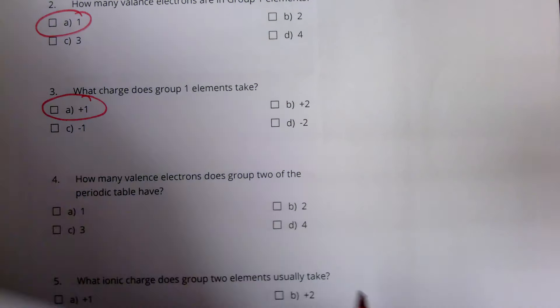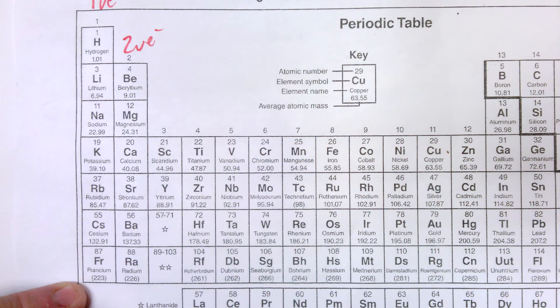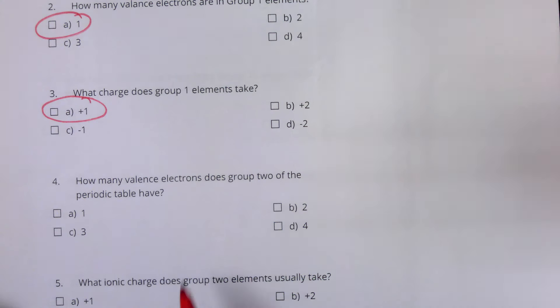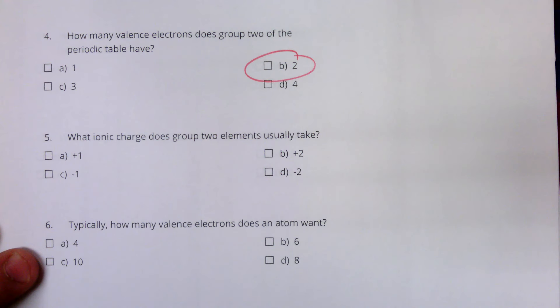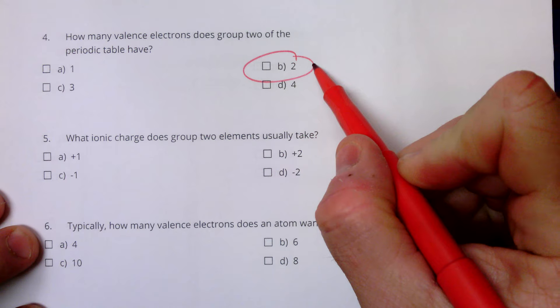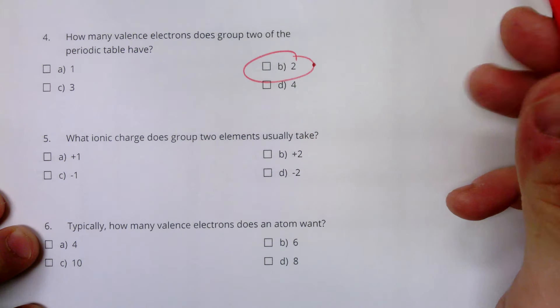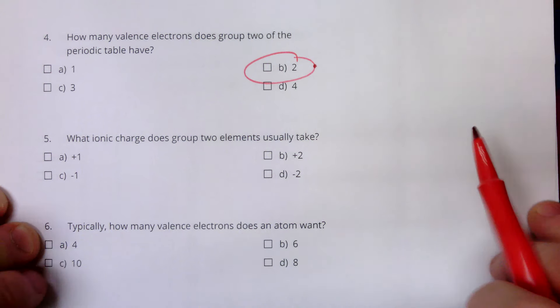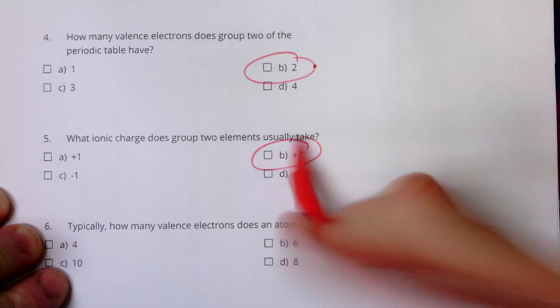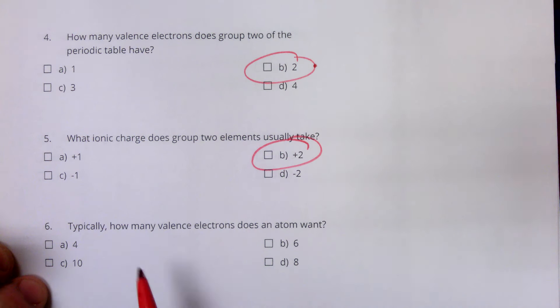How many valence electrons does group two have? Group two has two valence electrons. What ionic charge do they usually take? If they have two valence electrons, they're not going to take six — they're going to give up two. So they're going to give up two negative charges, which means they're going to have two more positives than negatives. They're going to have a plus two charge.